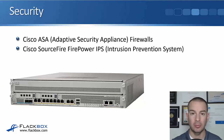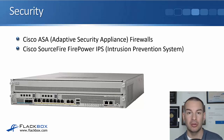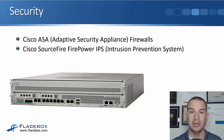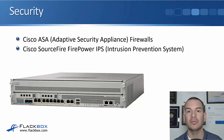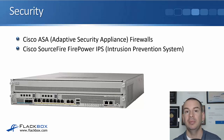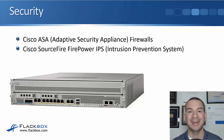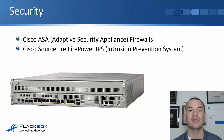The Cisco firewall is the ASA, that's the Adaptive Security Appliance, and you can see a picture of one here. The IPS, the Intrusion Prevention System from Cisco, is the Sourcefire Firepower IPS. That can be bought either as an appliance or, more commonly now, it will be either a software or hardware module that lives inside the ASA firewall.